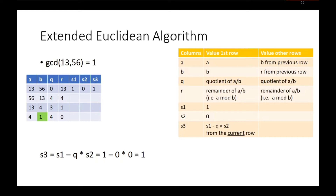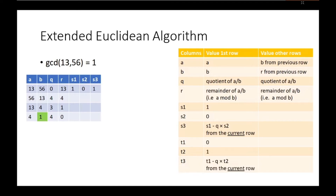Now there are 3 more columns: T1, T2, and T3. Their values are 0, 1, and T1 minus Q times T2, with T1, Q, and T2 being the values from the current row, which is still the first row. Now let's add T1, T2, and T3 to the table with values 0 and 1. Note that S1 and S2 are 1 and 0, while T1 and T2 are 0 and 1 — so those are actually swapped. Don't confuse them.